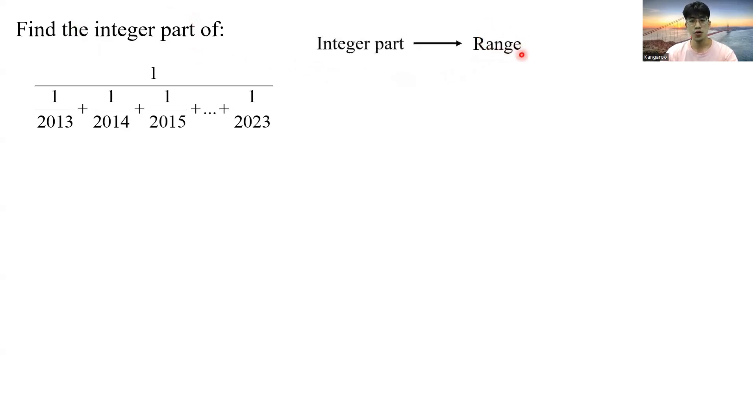And in order to know the range, you need to know a number that is slightly smaller than the value that you're trying to find, and a number that is slightly larger than the value that you're trying to find. So for this fraction, what is a smaller value? That is just, I can replace all the 2023 to 2013.